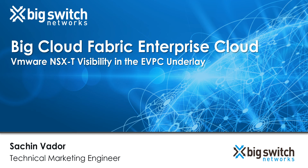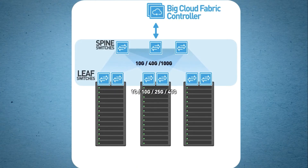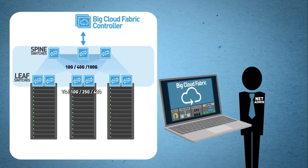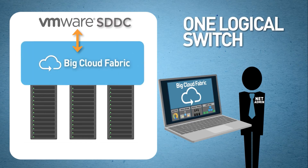In this demo we will see how the Big Cloud Fabric Enterprise Cloud controller integrates with NSX-T deployments by creating an Enterprise VPC or eVPC in the underlay and providing real-time visibility. Big Cloud Fabric Enterprise Cloud is powered by an SDN controller to build a leaf-spine fabric using open networking switches. Unlike box-by-box networks, Big Cloud Fabric provides a single pane of glass and integrates with various VMware SDN products, operating the entire fabric as a single logical switch.